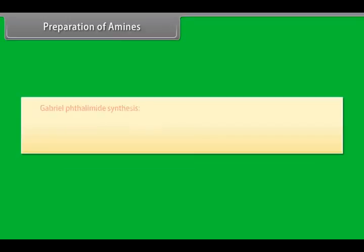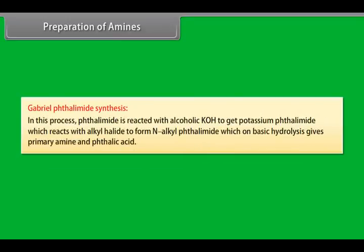Gabriel phthalimide synthesis. In this process, phthalimide is reacted with alcoholic KOH to get potassium phthalimide which reacts with alkyl halide to form N-alkyl phthalimide which on basic hydrolysis gives primary amine and phthalic acid.